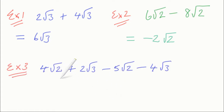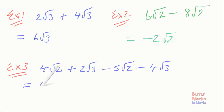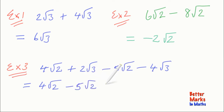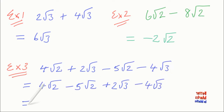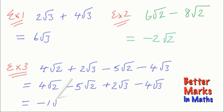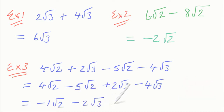In this third example there are two different like surds: the root 2 surds — minus 4 root 2 and minus 5 root 2 — and then 2 root 3 and minus 4 root 3. The key thing is if you group them together, 4 root 2 minus 5 root 2 — and remember the sign in front of the term stays with that term wherever you move it — and then plus 2 root 3 minus 4 root 3. Working them out: 4 root 2 minus 5 root 2 is minus 1 root 2, and 2 root 3 minus 4 root 3 is minus 2 root 3, which can be written as minus root 2 minus 2 root 3.